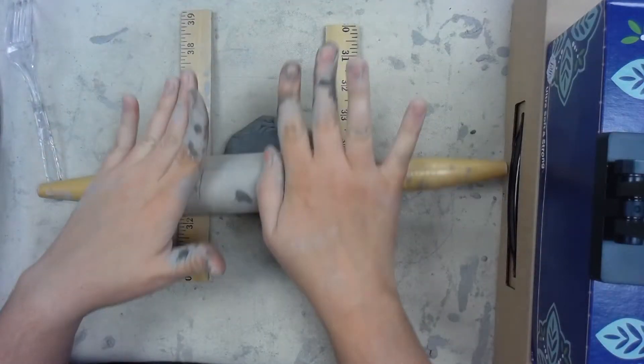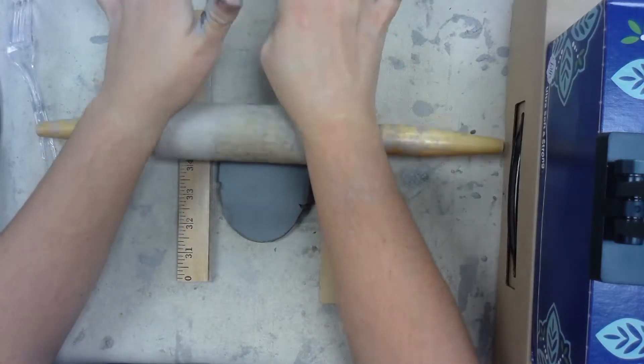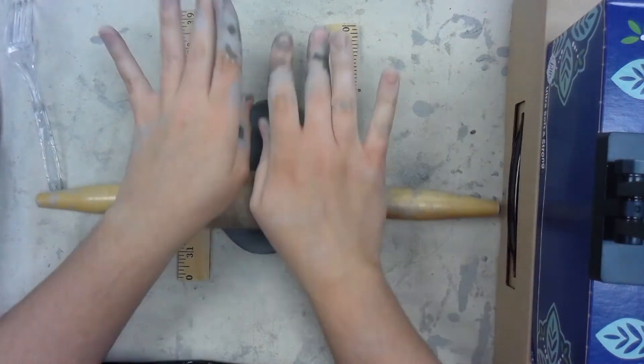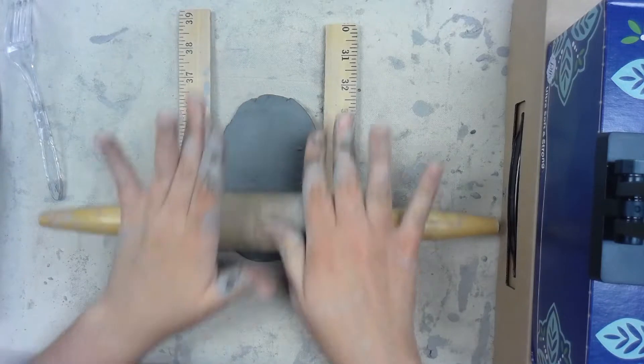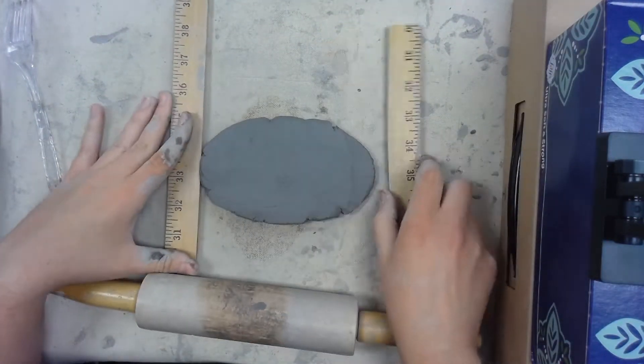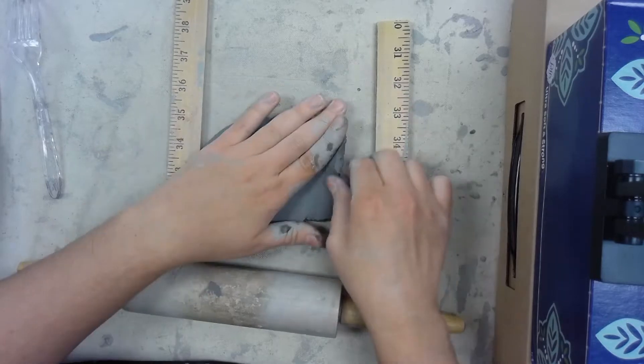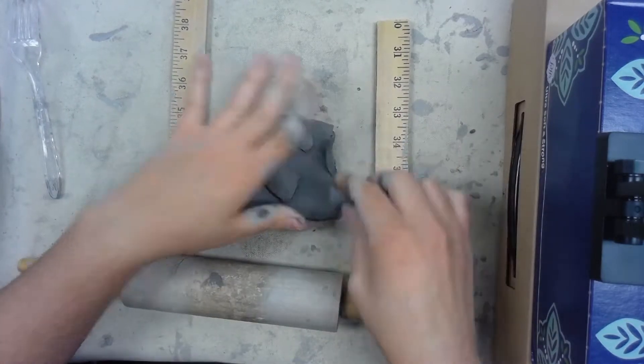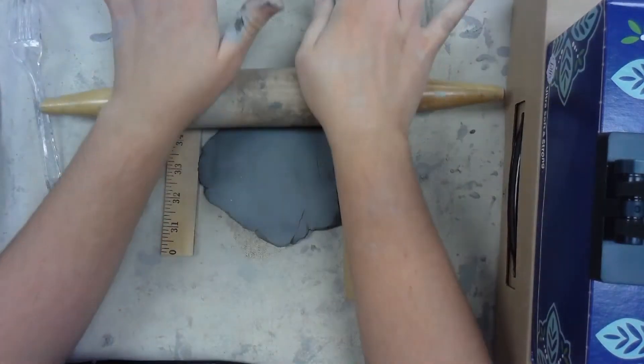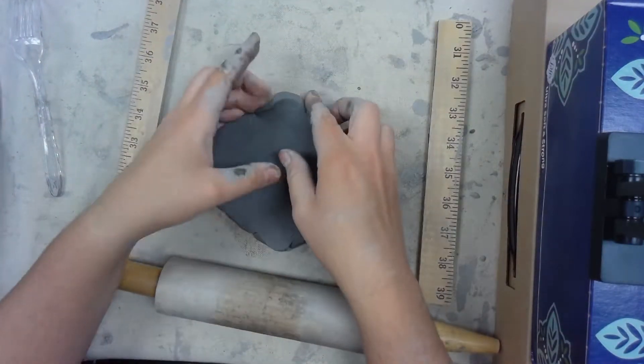The guides are underneath your rolling pin so it's about the same thickness throughout the whole thing. You could also turn it a different direction to make it wider. I think that slab's pretty good, about the same thickness all the way across.